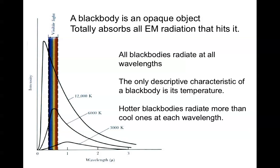Because black bodies have this unique property, the only descriptive characteristic of a black body is its temperature. Hotter black bodies radiate more than cool ones at each wavelength, and they radiate much more at shorter wavelengths than cooler ones do.